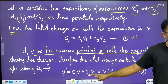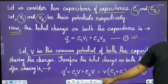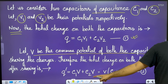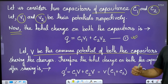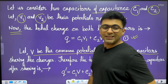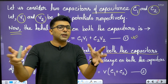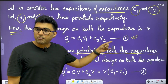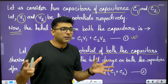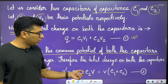The total charge Q equals V into C1 plus C2. That is equation number 2. This whole combination is the parallel combined result. We have equation 1 and equation 2.